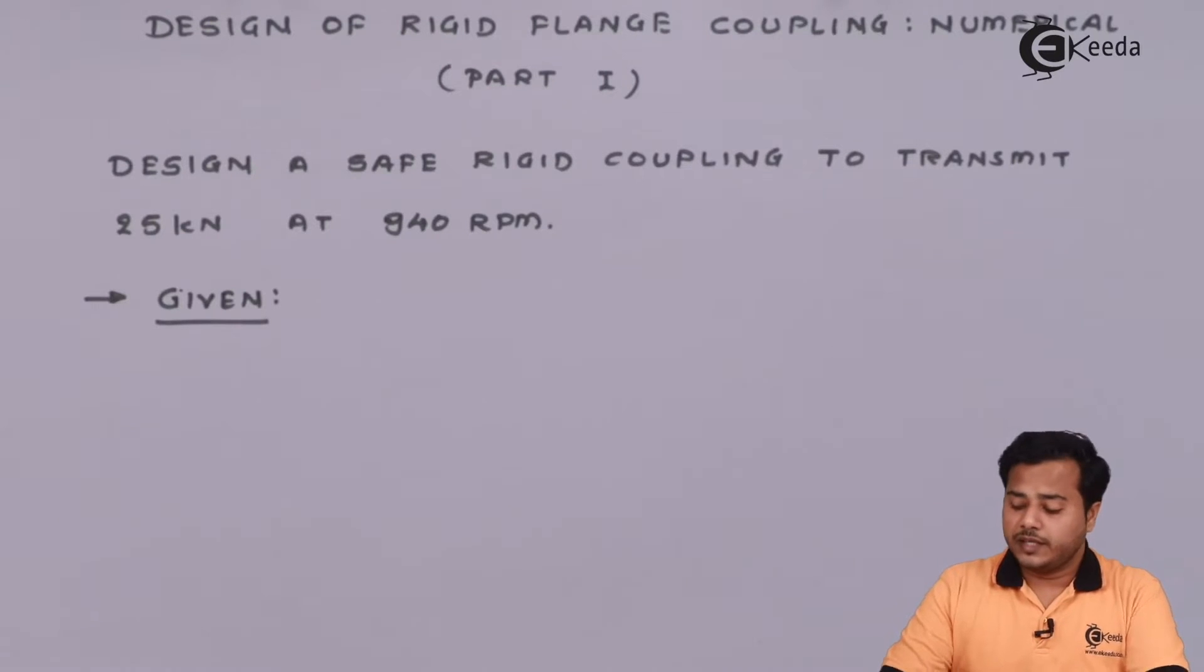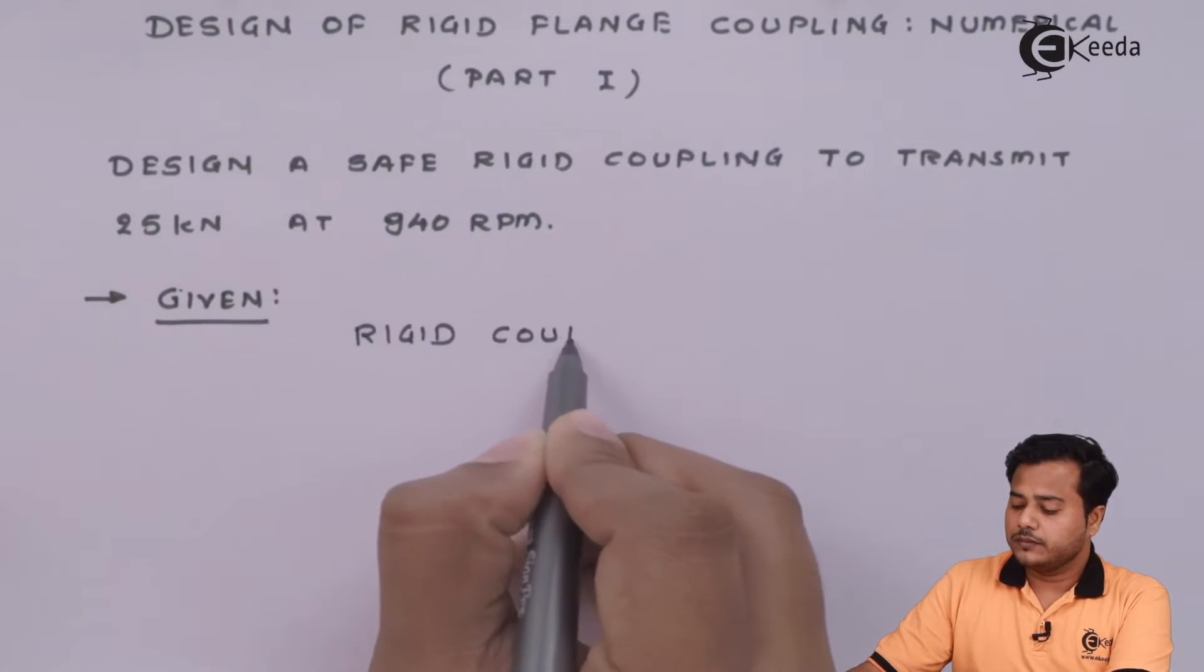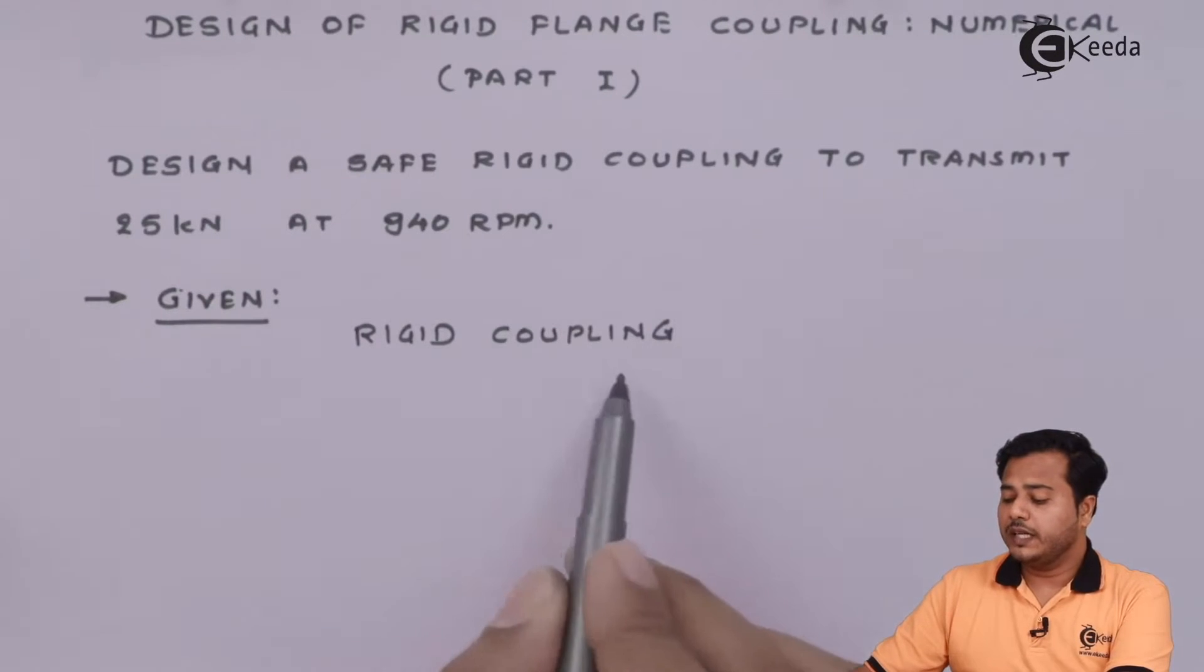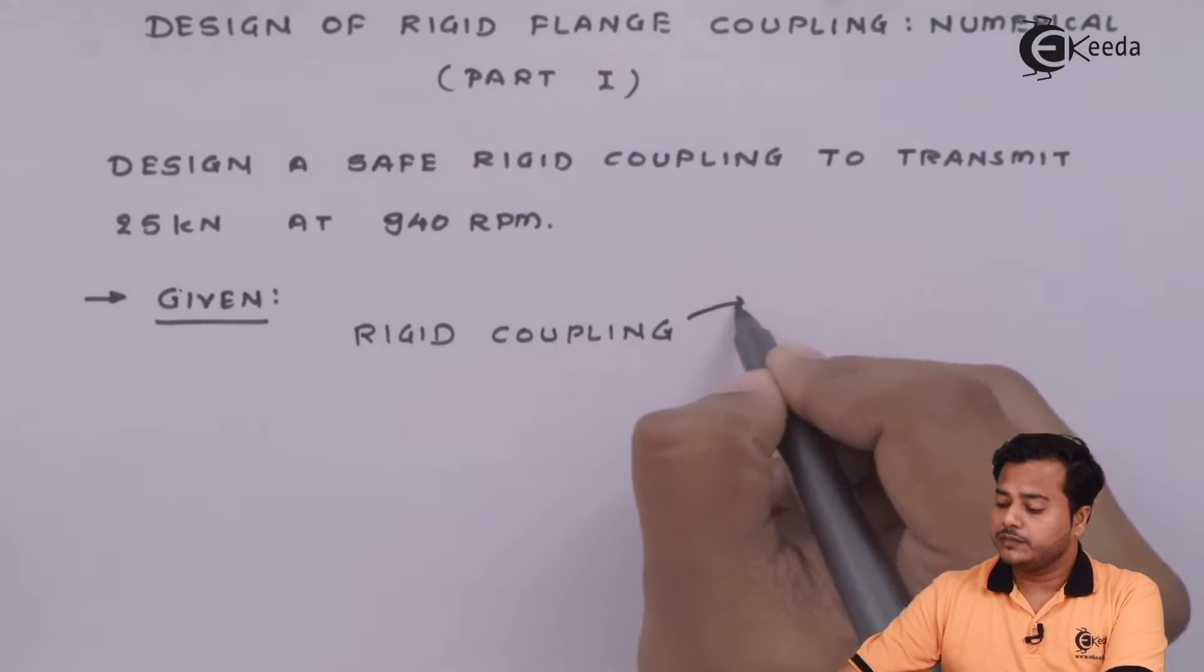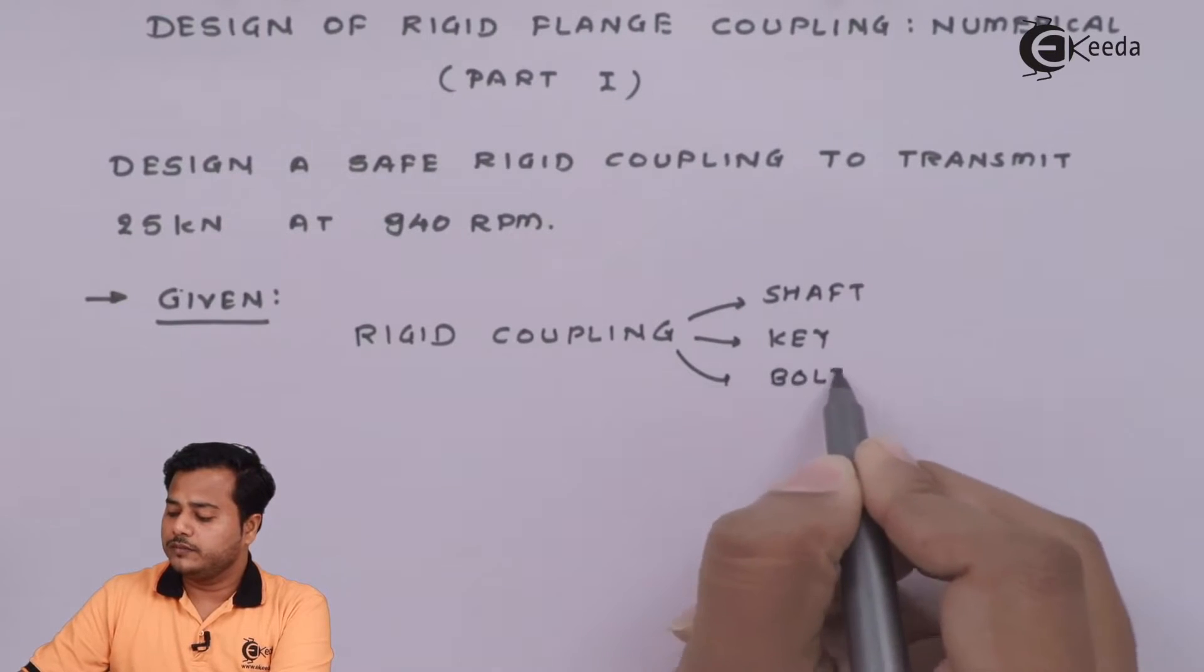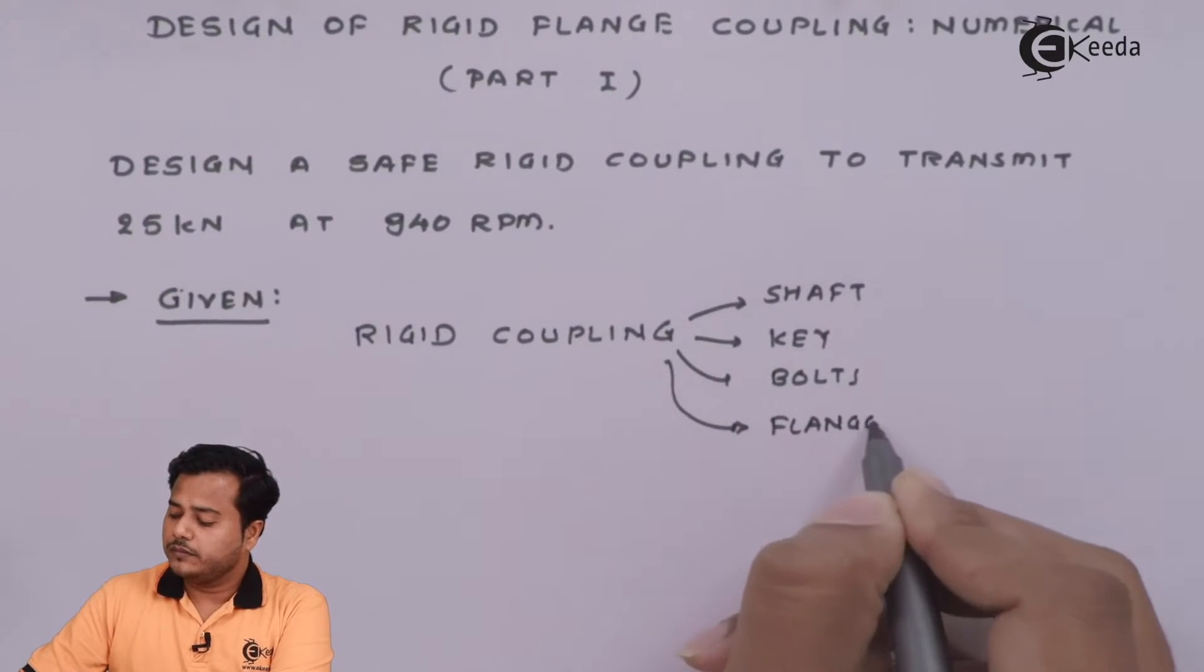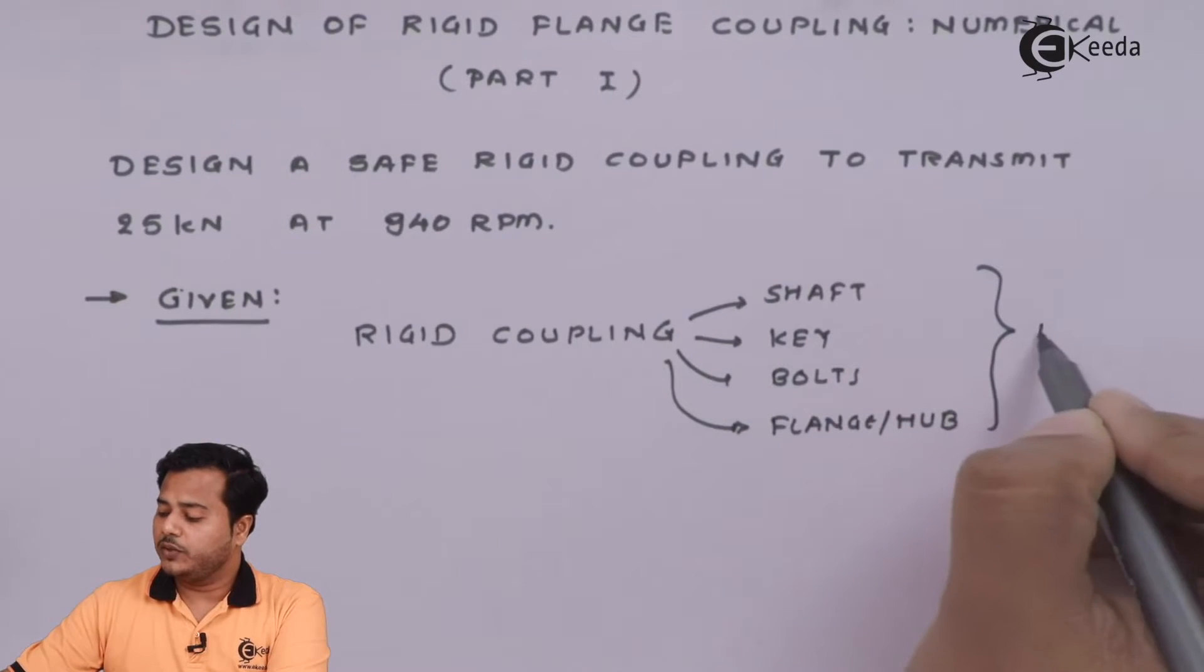In this, we can trace that we have to find out rigid coupling. Many things are hidden in one statement. It says we have to design rigid coupling or flange coupling, meaning we have to design shaft, key, bolts, and most importantly flange or hub. Undoubtedly, we have to select a standard material also.